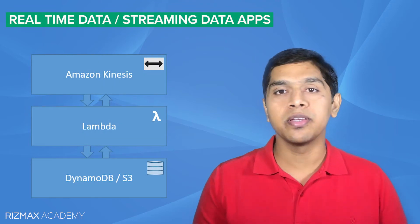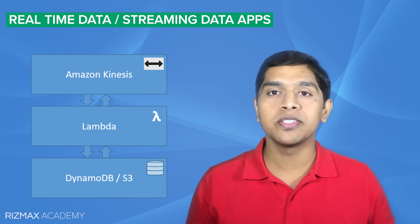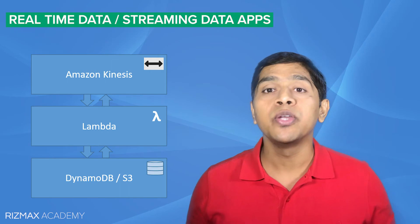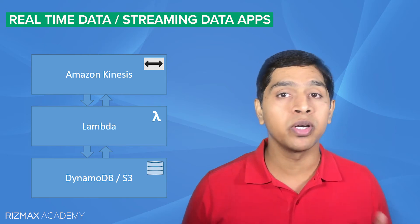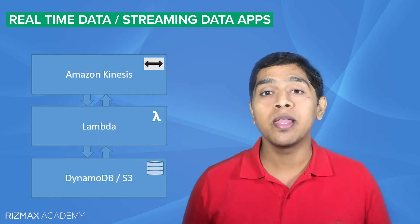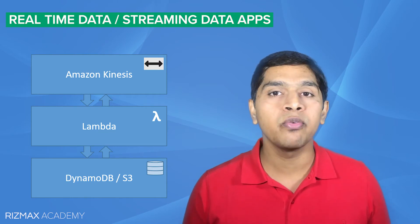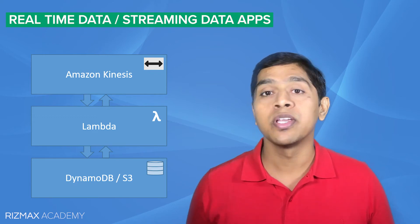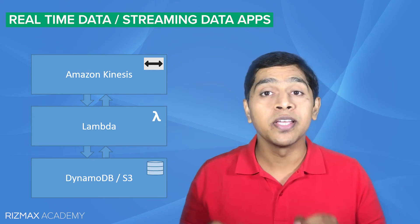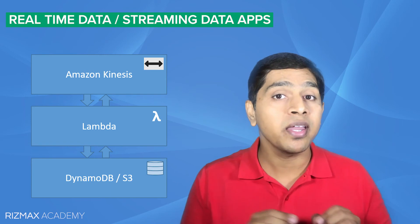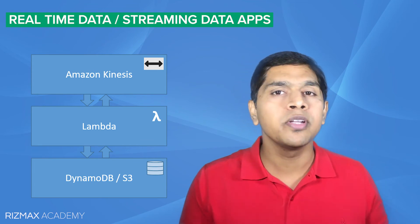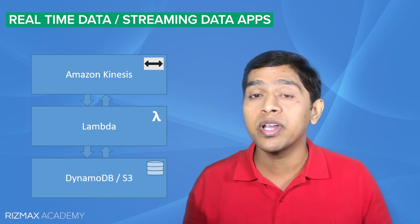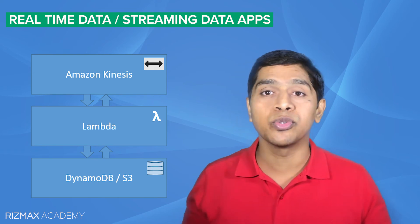Now let's look at real-time data processing systems or real-time streaming data processing systems. You can use Amazon Kinesis along with Lambda, DynamoDB and S3 to create your real-time data processing systems. These typically have variable workloads and the serverless approach helps with automatic scaling during high workloads and scaling down to save costs during idle time. Amazon Kinesis is a service that lets you collect, process and analyze real-time streaming data from multiple sources at any scale — literally processing terabytes of data every hour coming in from thousands of sources simultaneously.